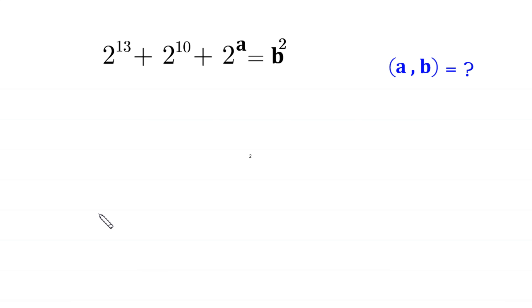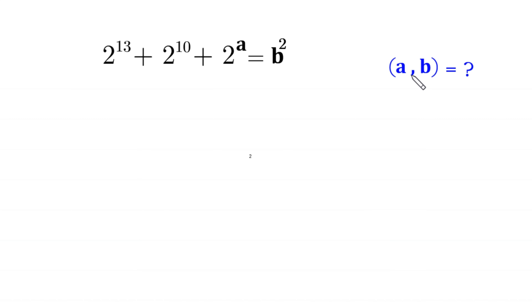Hello everyone, you are welcome to how to solve this very nice algebra equation. 2 to the power 13 plus 2 to the power 10 plus 2 to the power a is equal to b squared. We need to find all possible values of a and b.